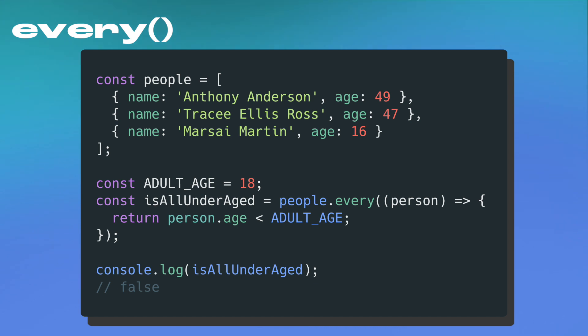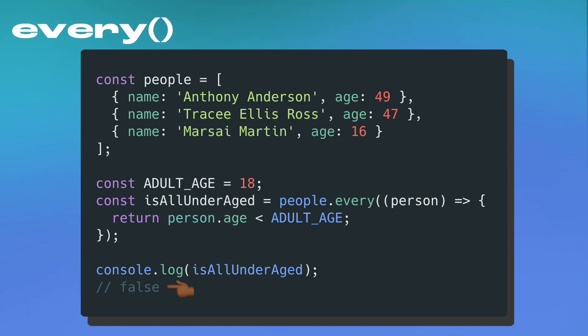Similar to some, every solves the problem of having to determine the default value. In this code block, I assign the return value from every to my variable isAllUnderAge. Inside the callback, I have a predicate that returns whether the current person's age is less than 18. If all elements in the array pass the check, we return true; otherwise it will be false. In our case, the final value is false.